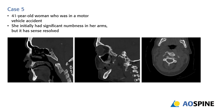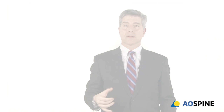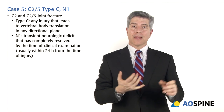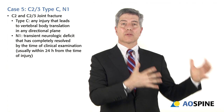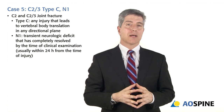Case five: a dislocation at C2-3. Looking closely, you see translation at C2-3, which can occur with a severe hangman's fracture or a C2-3 dislocation. The sagittal profile shows significant instability, and the transaxial images show two almost superimposed vertebral bodies. So it's classified as C2-3 type C. N1 indicates the patient had a neurologic problem that had resolved by the time they reached the operating room.